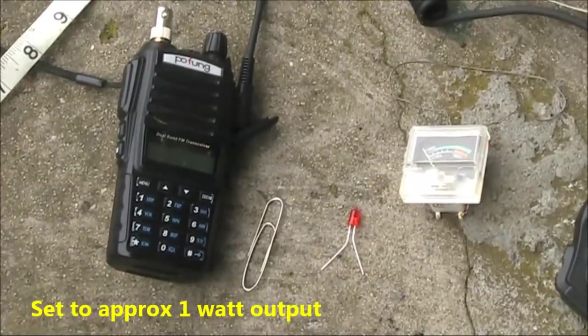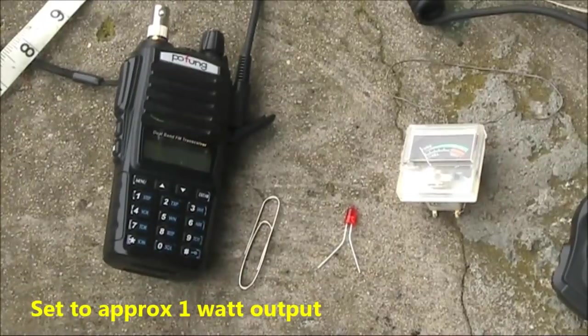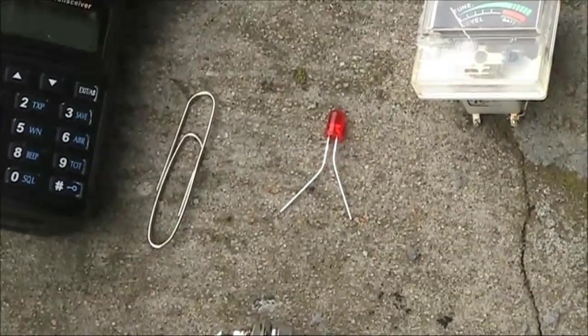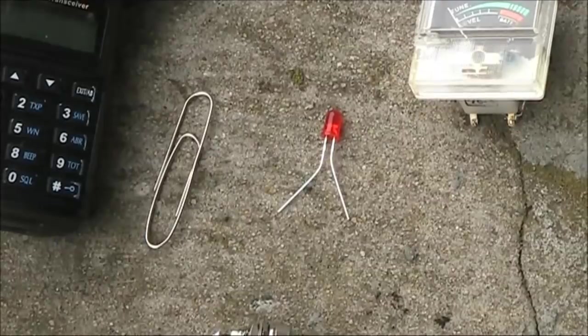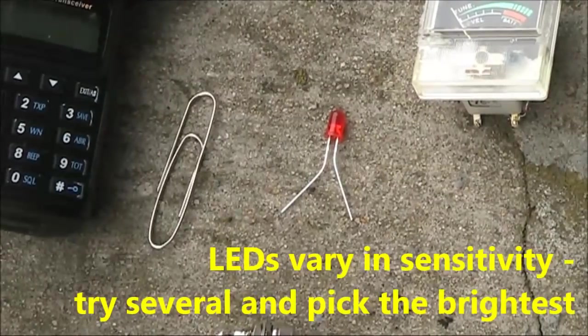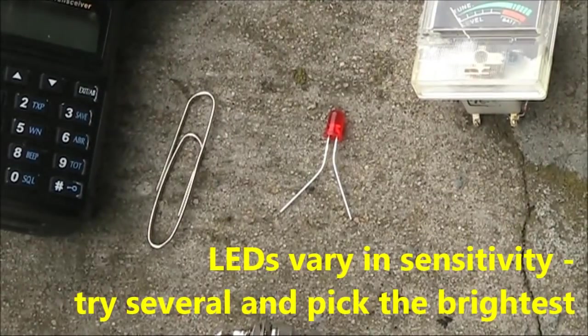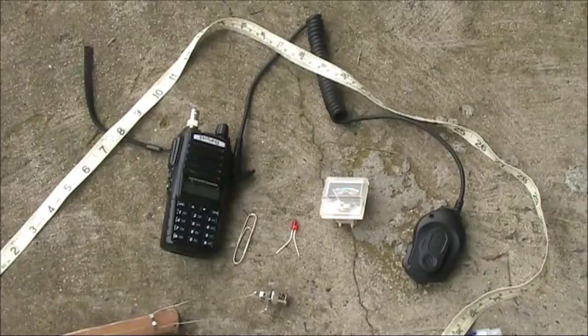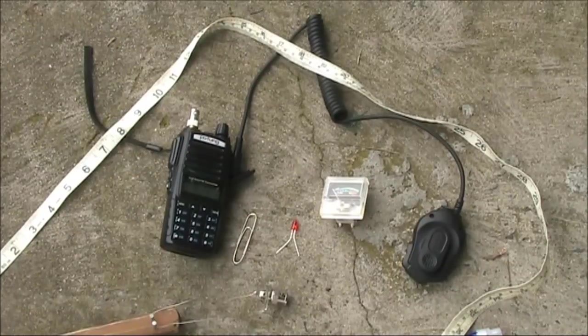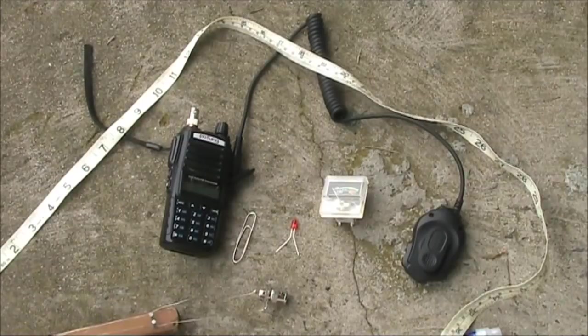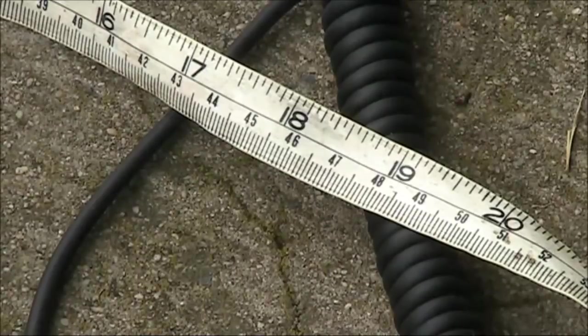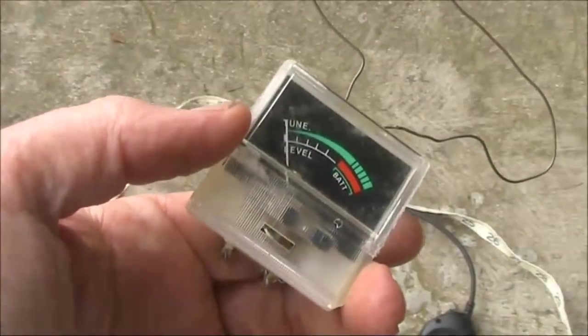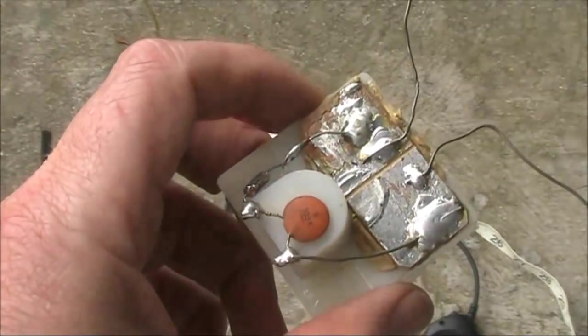For the signal source, I'm using a cheap Chinese handheld. For the shorting bar, a paper clip, and for the indicator, an LED. Although not essential, it's desirable that the transceiver has an external microphone. And although it's a nice to have, a little RF ammeter is useful.